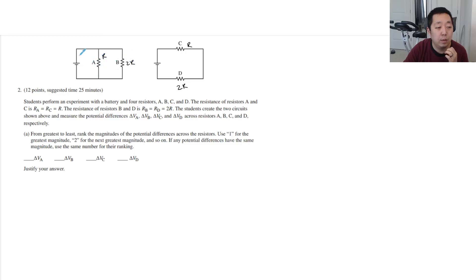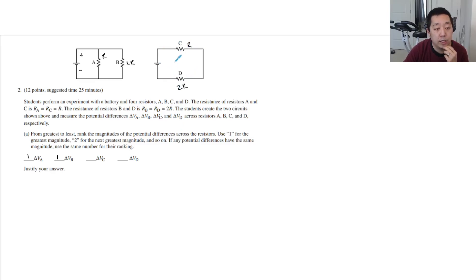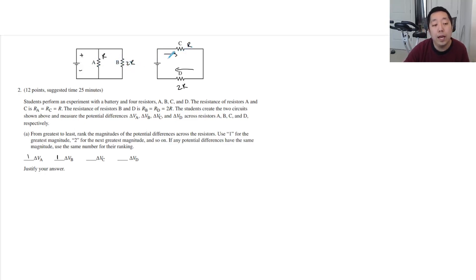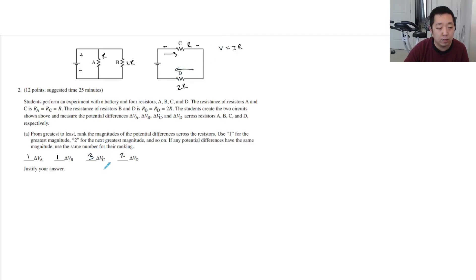These resistors are parallel with the battery, so each of them sees the entire voltage drop. So those are ranked one, and they're both the same. Then these two are in series, so the same current flows through them. Neither of them sees the full battery voltage, so they're definitely smaller than the parallel ones. But who has the biggest drop? V equals IR — they have the same current, but this one has a greater drop because of the bigger R. So bigger R, same I, gives a higher voltage drop. That means D is next, and then ΔVC is next.